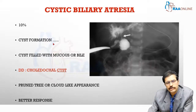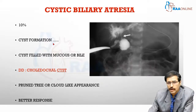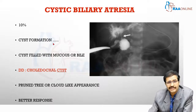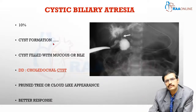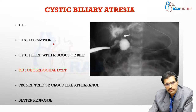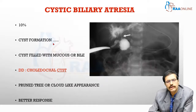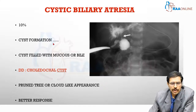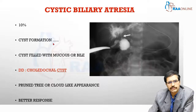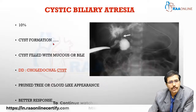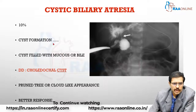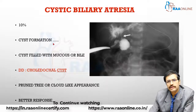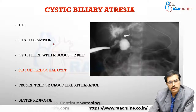Another variant is cystic biliary atresia, accounting for 10% of cases. It is characterized by the formation of a cyst, proximal and distal to which the biliary tree is obliterated. The cyst is usually filled with mucus or may contain bile. It is a common differential diagnosis for a choledochal cyst. The classical intraoperative cholangiogram appearance of cystic biliary atresia is a pruned tree or cloud-like appearance. It is considered one of the better variants of biliary atresia as it has a better response to surgical intervention.